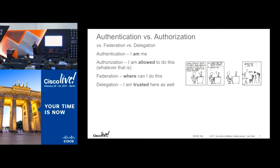Federation and delegation go together. Delegation basically says: I logged into this service — and it could be a person or an application; in the API context it's most likely system-to-system. The application is logged into a service, and that service says, 'I don't care what's going on over here — if you're authorized to use this, then you're authorized to do this.' So that's just delegating from one service to another.